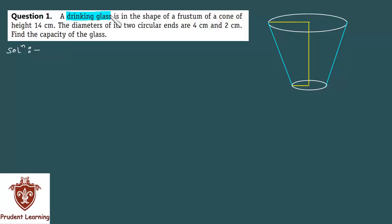A drinking glass is in the shape of a frustum of a cone of height 14 cm. The diameters of its two circular ends are 4 cm and 2 cm.